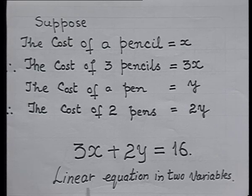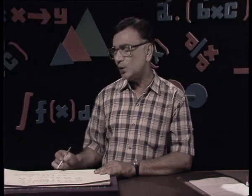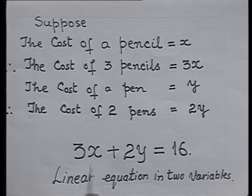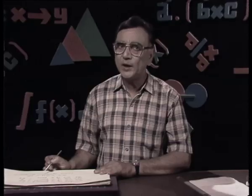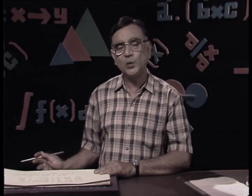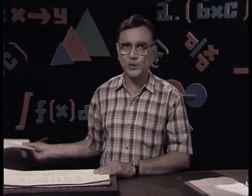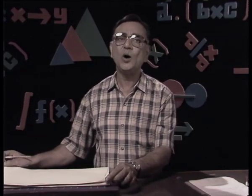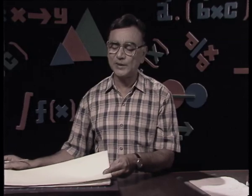We call it a linear equation in 2 variables because there are two unknown quantities: x and y. This is one example of how we form a linear equation. Now we have to form another linear equation from a different example and see how we get a linear equation corresponding to that.